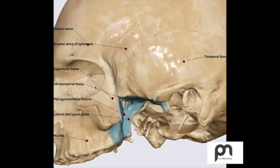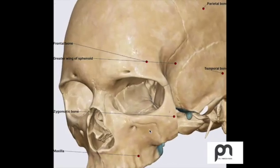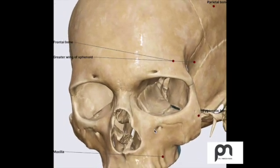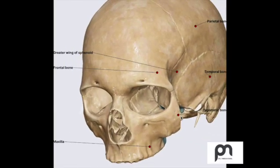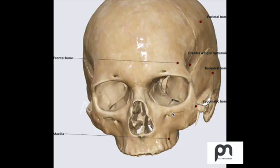You can easily approach the infratemporal fossa via the orbit. I hope you have enjoyed this session. Thank you. We will discuss regarding nerves and the branches of trigeminal in our next session.